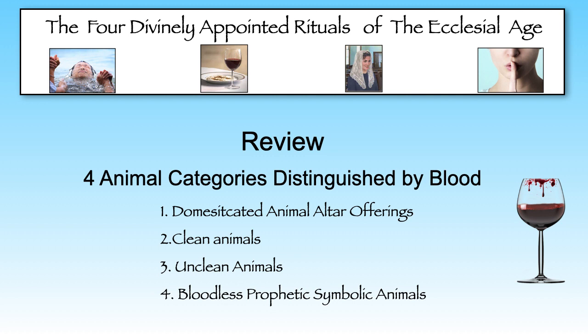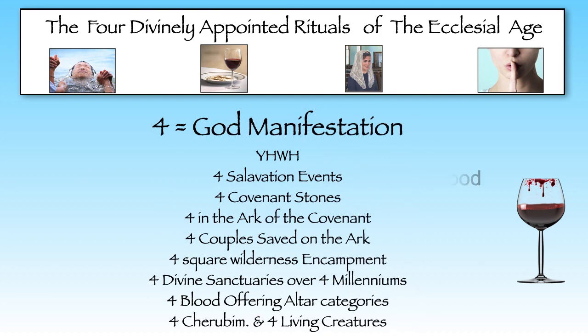There are four categories of animals presented in scripture distinguished on the basis of blood. Four is the number of God-manifestation, foundationally demonstrated in the four letters of the name of God, Y-H-W-H, or Yad-Heh-Vav-Heh.